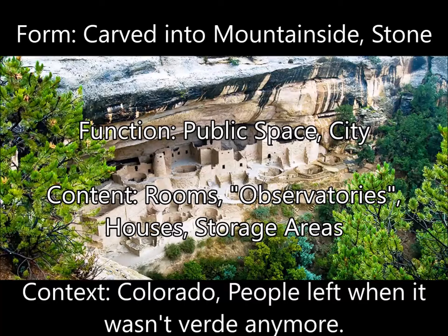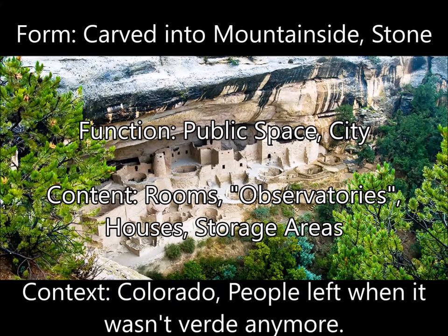You also have storage areas, cooking areas, and all of these public, normal spaces that you would have from houses. For context, Mesa Verde is located in Colorado, and the dwellers left it when the mesa was not verde anymore — a drought or some kind of natural phenomenon caused them to abandon the city.